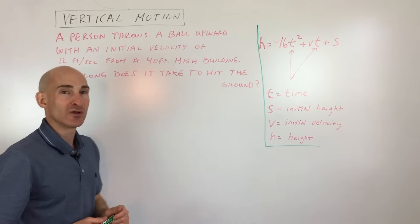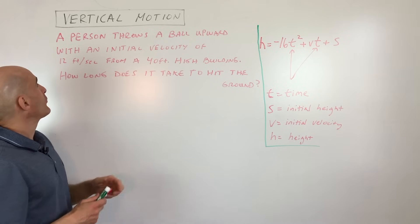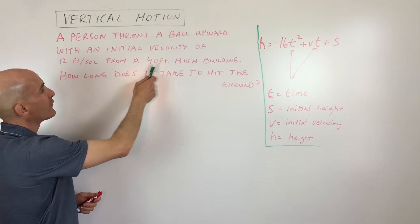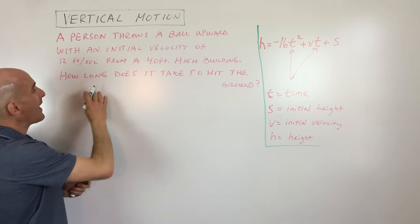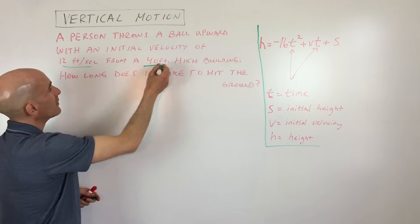So let's do an example problem and we'll understand this a little bit better. A person throws a ball upwards with an initial velocity of 12 feet per second from a 40-foot high building. How long does it take for the item to hit the ground?